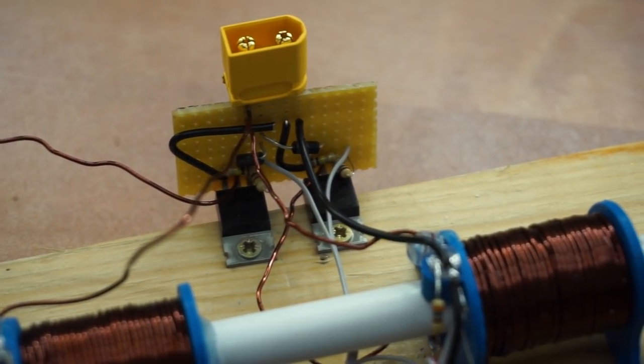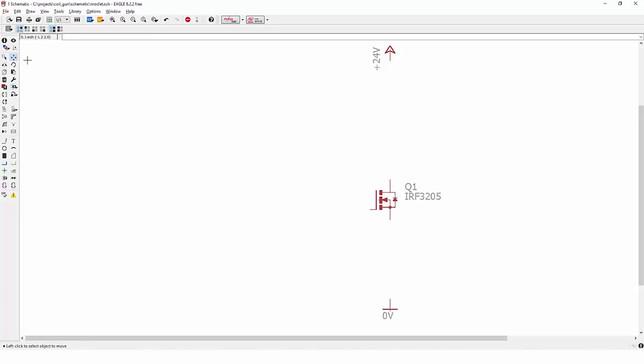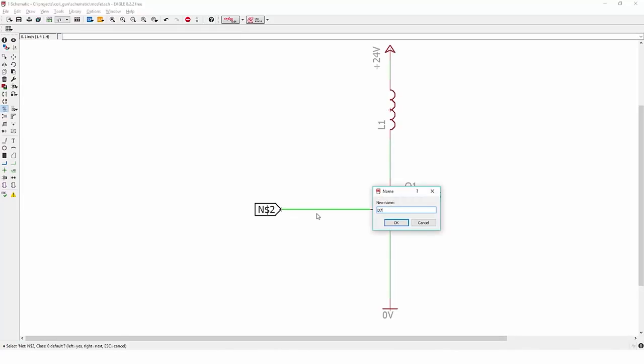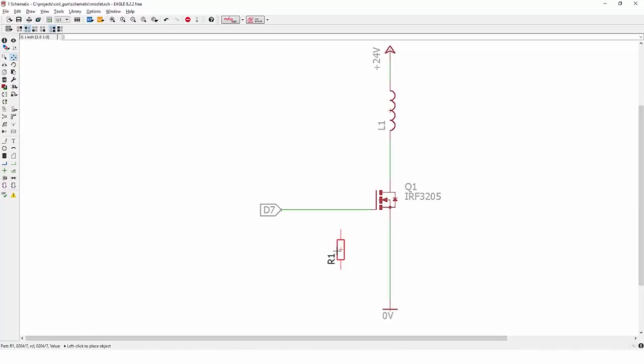So this is how you would connect a regular MOSFET to an Arduino. Nothing fancy. A source goes directly to ground. Drain is connected to your coil, which is on the other end connected to the battery. Gate goes to Arduino. Make sure both Arduino and battery grounds are connected together. Add a pull-down resistor here and flyback diode here, and you're good to go. Right?